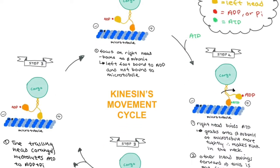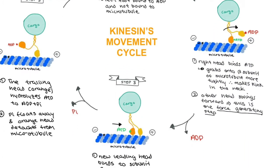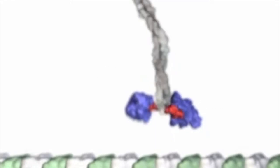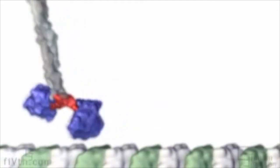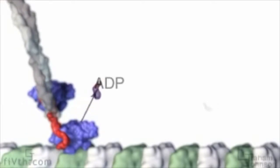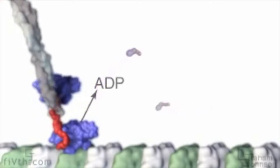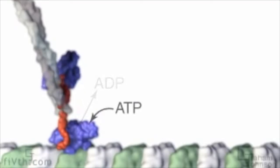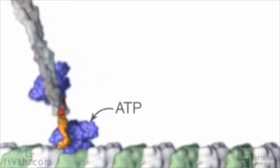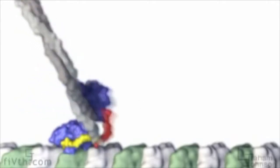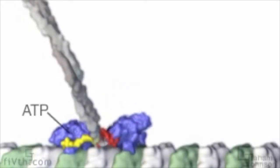Let's take a quick look at the structural changes of kinesin during its movement. In solution, both kinesin heads contain tightly bound ADP and move randomly, driven by Brownian motion. When one of the two kinesin heads encounters a microtubule, it binds tightly. Microtubule binding causes ADP to be released from the attached head, and ATP then rapidly enters the empty nucleotide binding site. This nucleotide exchange triggers the neck linker to zipper onto the catalytic core.